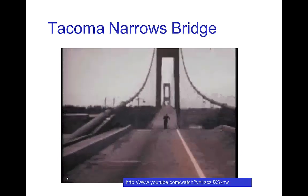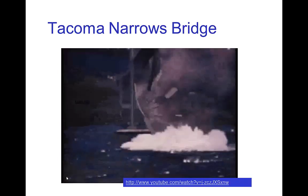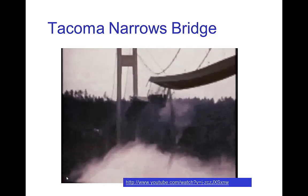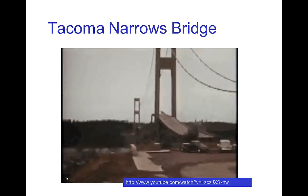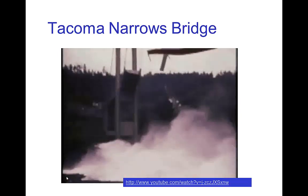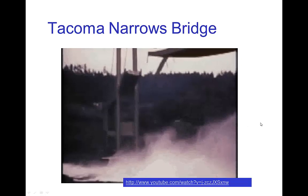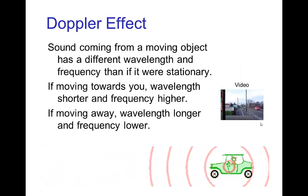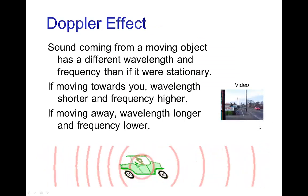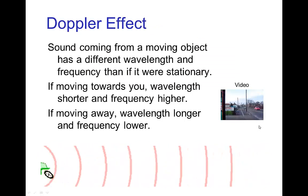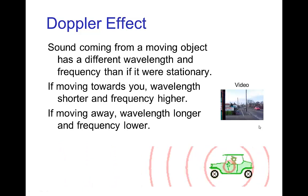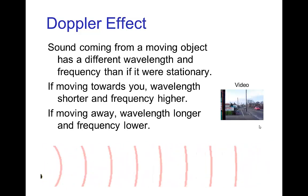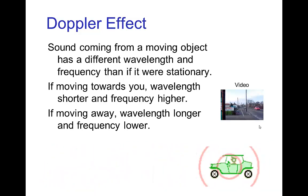Someone is seen escaping right before the final collapse of the bridge. Obviously, modern bridge engineering has had to account for this possibility. The second important effect is the Doppler effect — an effect on waves when they are produced by a source moving towards or away from the listener.